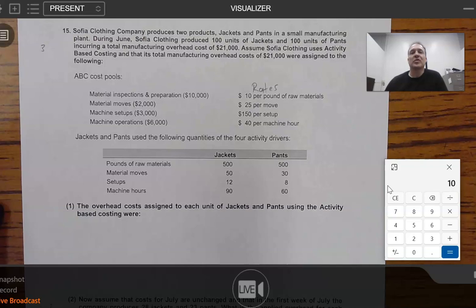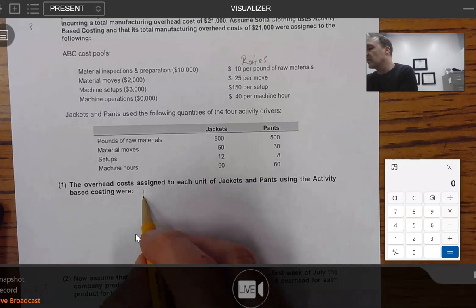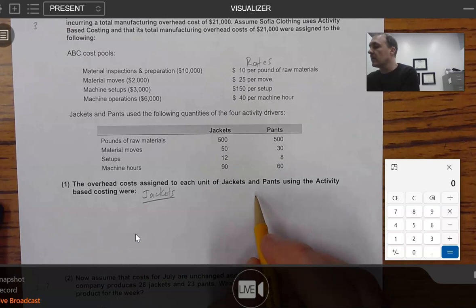You can take this $2,000, and material moves are the cost driver. Well, it looks like between the two products, we have 80 total, and 80 into 2000 is going to be $25, and so forth. So now you know where those numbers are coming from. So what do we need to do to figure this out? Well, what we have to say is we're going to say, okay, I've got two products. I've got jackets and I have pants.